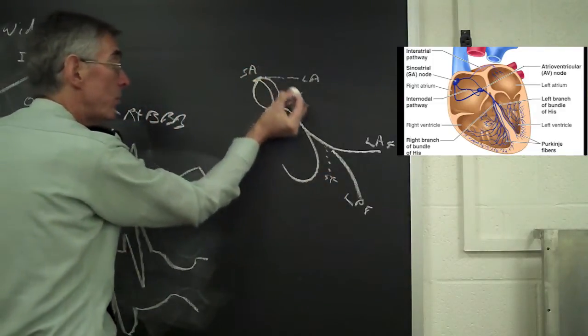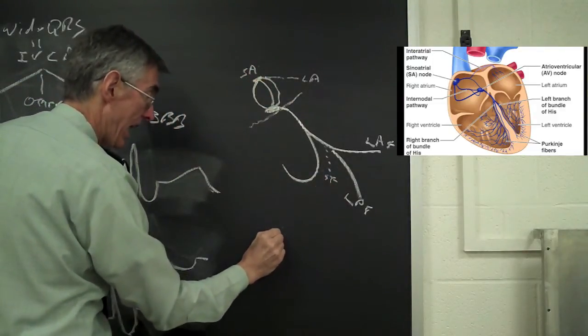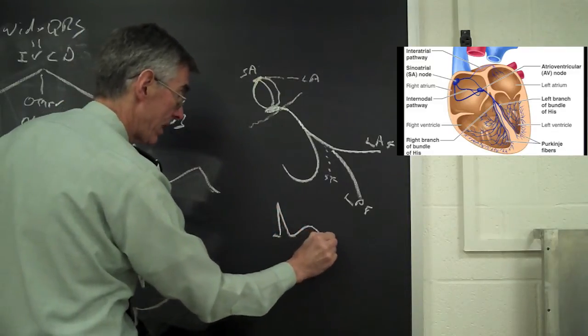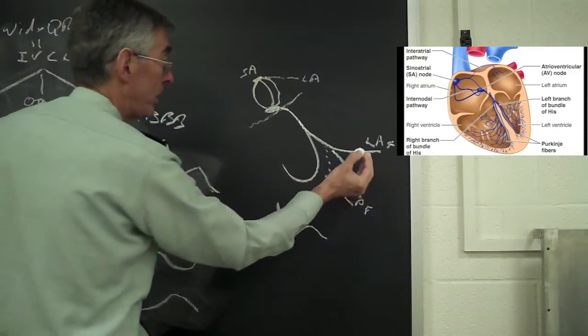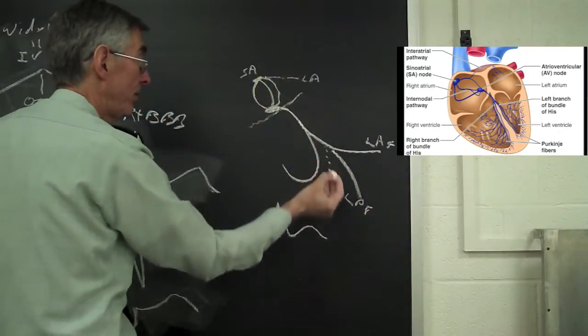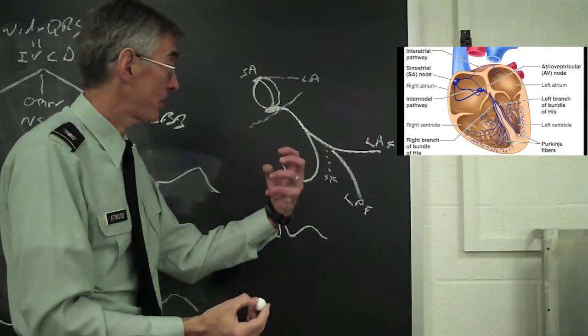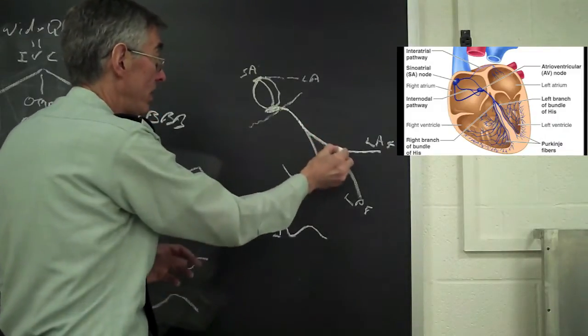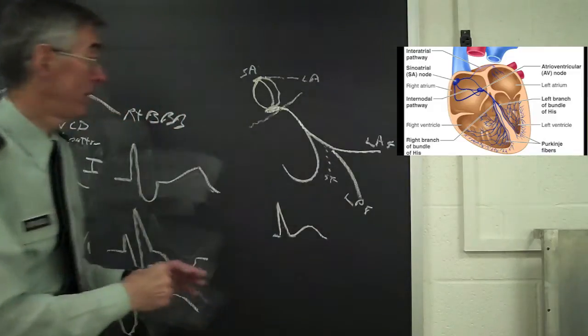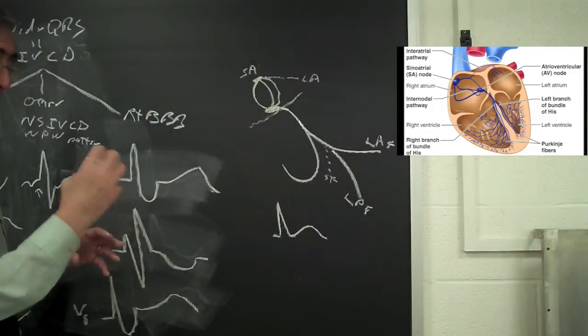This is the normal conduction giving a QRS that is narrow and allowing for apex to base contraction in a systematic synchronized method so that you can get blood going through the pulmonary artery and aorta, with normal contraction.